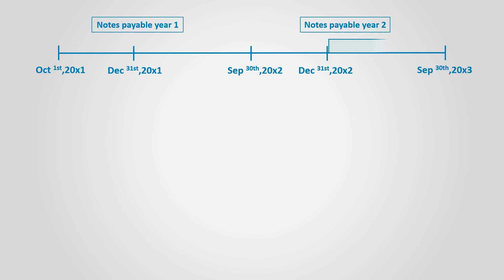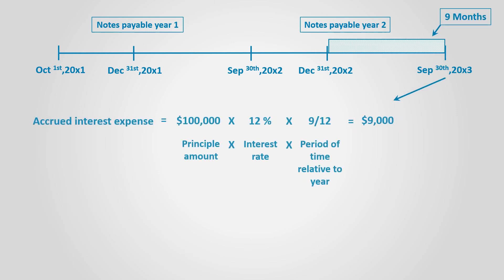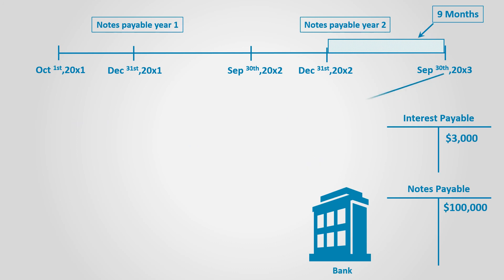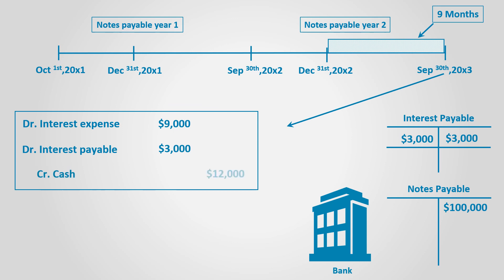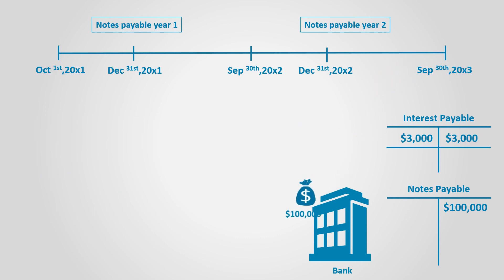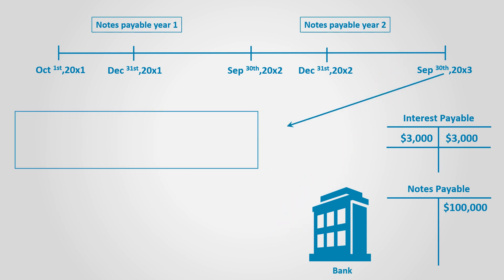At maturity date, the business is to pay the interest for nine months of $9,000. The entry to record the payment of interest is to debit interest expense for $9,000 and interest payable for $3,000, and to credit cash for $12,000. The business is also to pay back the principal amount of the loan; in such a case, it debits notes payable as the liability decreases and credits cash for the principal amount of $100,000.